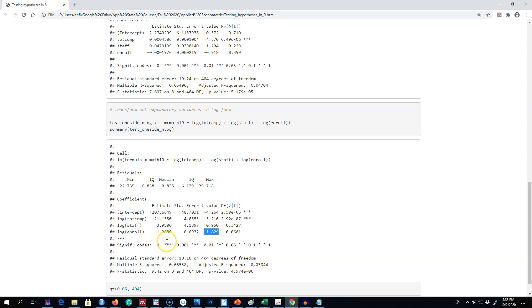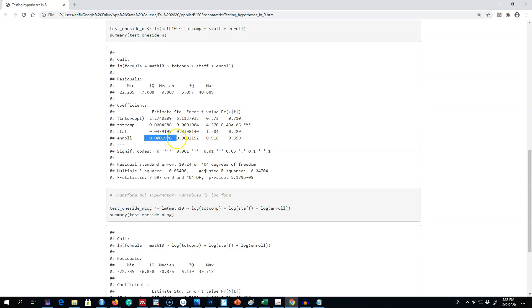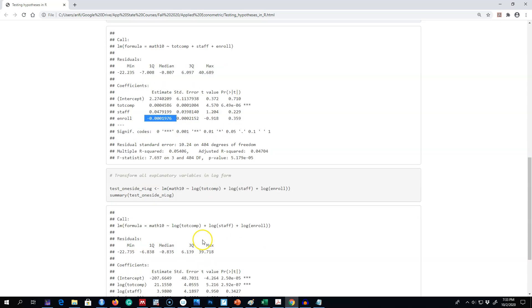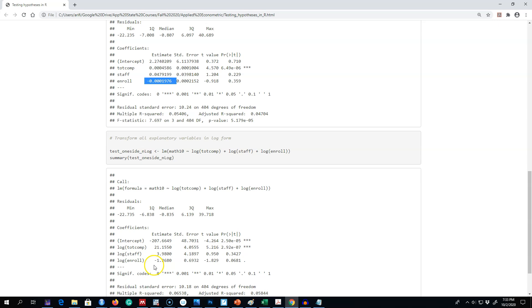The major question is which of these two models should we use? One model is rejecting our null hypothesis and the other is failing to reject this null hypothesis. The level-level model fails to reject our null hypothesis that enrollment has no impact on student performance. On the other hand, the level-log model is rejecting our null hypothesis, and we are concluding that enrollment has a negative and statistically significant impact on student performance.